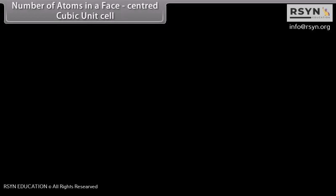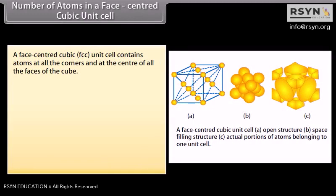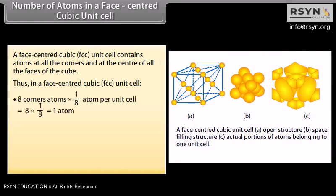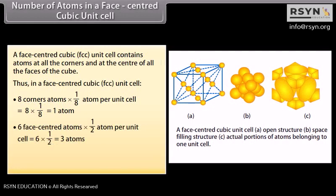A face centred cubic (FCC) unit cell contains atoms at all the corners and at the centre of all the faces. Thus: 8 corner atoms × (1/8) = 1 atom, and 6 face centred atoms × (1/2) = 3 atoms. Therefore, the total number of atoms per unit cell is equal to 4 atoms.